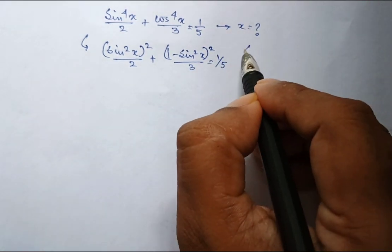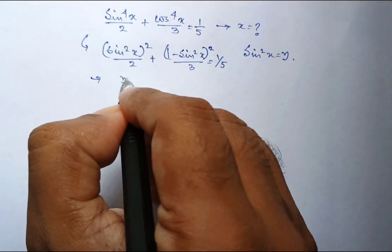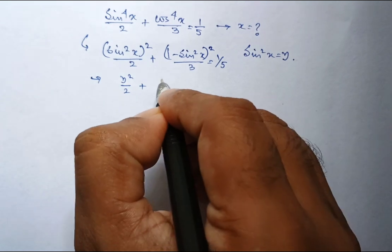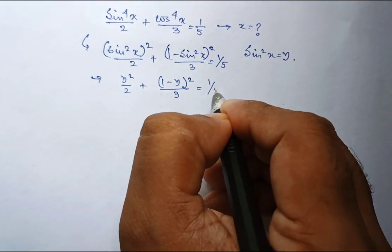I am assuming sin square x equal to y. If so, then it is y square by 2 plus 1 minus y whole square divided by 3 equal to 1 by 5.